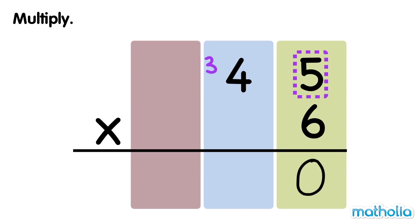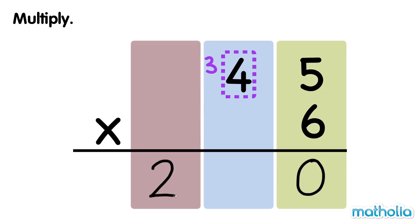Next, multiply the tens by 6 and add the regrouped tens. 4 tens times 6 equals 24 tens. Plus 3 tens equals 27 tens. Regroup 27 tens into 2 hundreds and 7 tens. 45 times 6 equals 270.